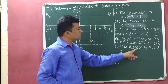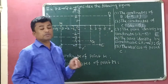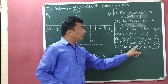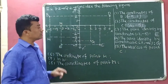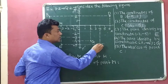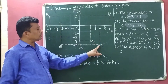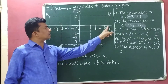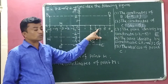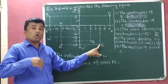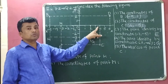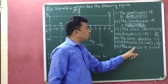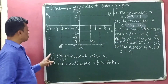Fifth, the abscissa of point C. Abscissa means x-coordinate. Here we have to identify the x-coordinate of point C. Point C is available here and the perpendicular touches at 4 on the x-axis. So, 4 is the x-coordinate of point C, or we can say that 4 is the abscissa of point C.